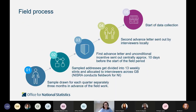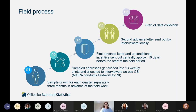The field process covers basically five stages. The sample is drawn on a quarterly basis about three months in advance. Sample addresses get divided into 13 weekly stints — interview areas allocated to interviewers across Great Britain, while NISRA conducts fieldwork in Northern Ireland. A first advance letter and an unconditional incentive of £10 gets sent out about 10 days before the field period starts, and a second advance letter is sent by interviewers locally about five days before. Data collection then starts, normally for a week with an additional week to follow up.